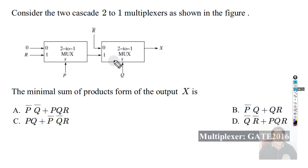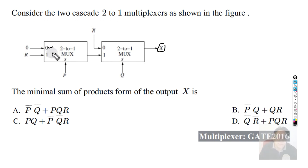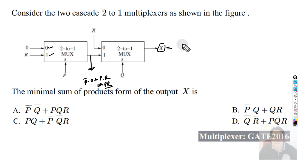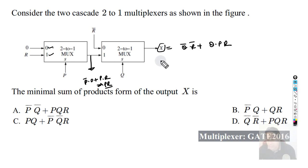Final question: two cascaded 2-to-1 multiplexers with inputs 0 and 1. The first MUX output is P complement·0 + P·R = P·R. Then the output X = X complement·(Q complement·R complement) + Q·(P·R). Simplifying: Q complement·R complement + Q·P·R, which matches option D. Correct answer: option D.